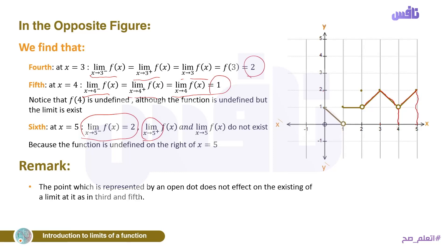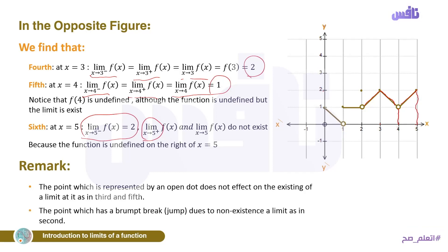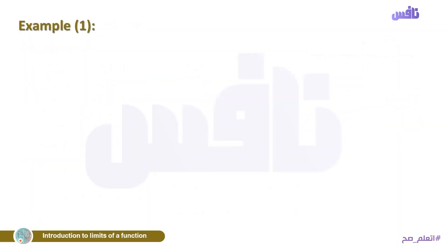Fifth case: at x = 4 — from the left and right, f(x) approaches 1. So the limit as x tends to 4 equals 1. Note that f(4) is undefined, but the limit still exists. Sixth case: at x = 5 — from the left, f(x) approaches 2, but there is no right limit because the function is undefined to the right of x = 5. Therefore the limit as x tends to 5 does not exist.